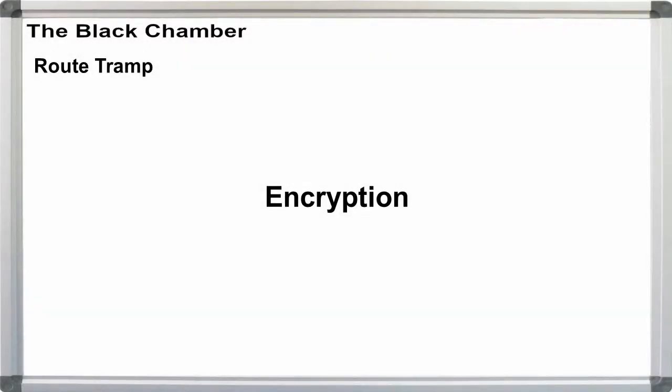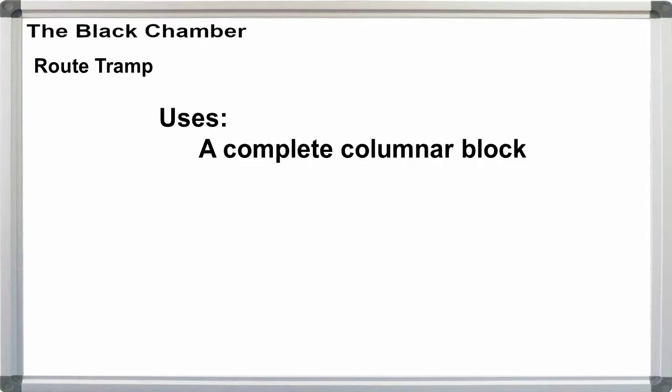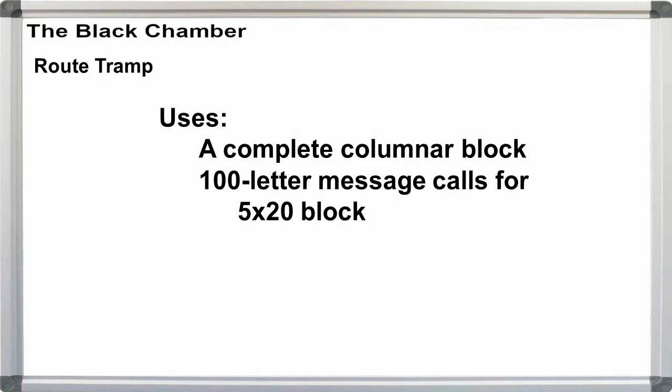Encryption. As mentioned in the intro, route tramp uses a complete columnar block of individual letters. If the message is 100 letters long, then the block can be 5 columns by 20 rows or 10 by 10. Encryption follows two phases.